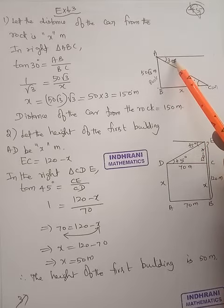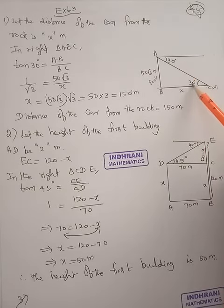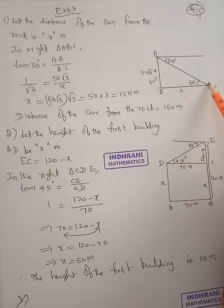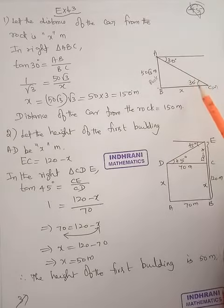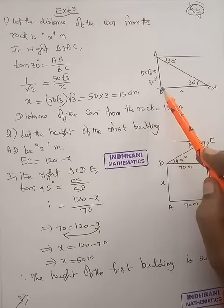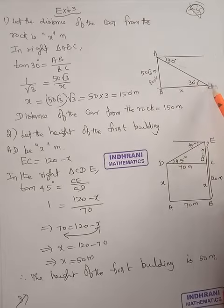This is 30 degrees. Then this will definitely be 30 degrees because these are parallel lines and this is a transversal. This is 30, so this is also 30. Now what we need to find is the distance from the rock to the car.